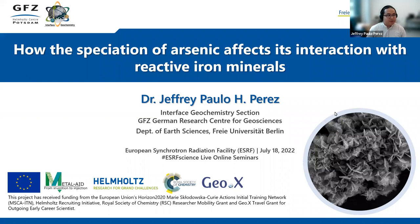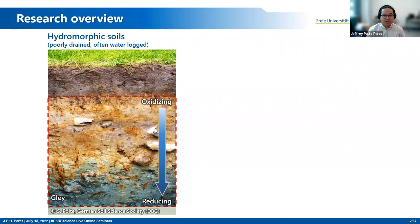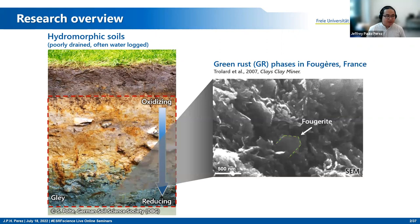To begin with, reactive iron-bearing minerals are present in many natural and engineered environments. For example, in hydromorphic soils, which are often poorly drained and waterlogged, it is characterized by this upper ochre-colored mineral layer, which changes to this blue-green-colored glade horizon. This color change from ochre to blue-green signifies the change from oxidizing to reducing conditions. This blue-green color in the glade layer has been ascribed to the presence of mixed-valent iron(II)/iron(III) phases, and this has been identified to be green rust or fougerite.